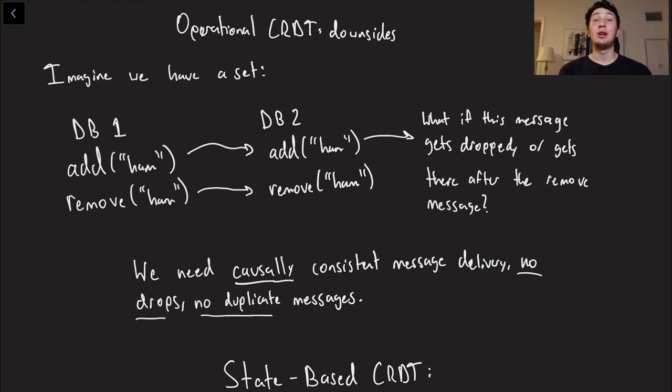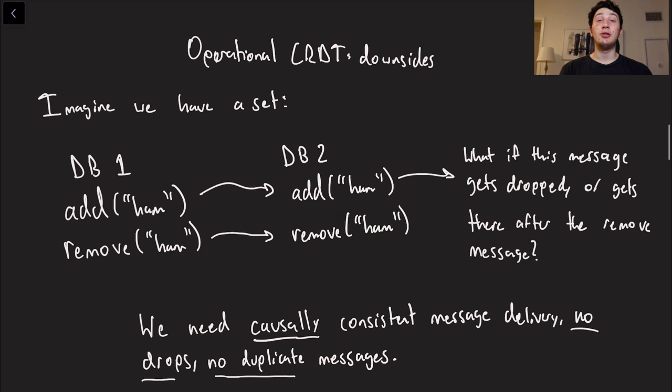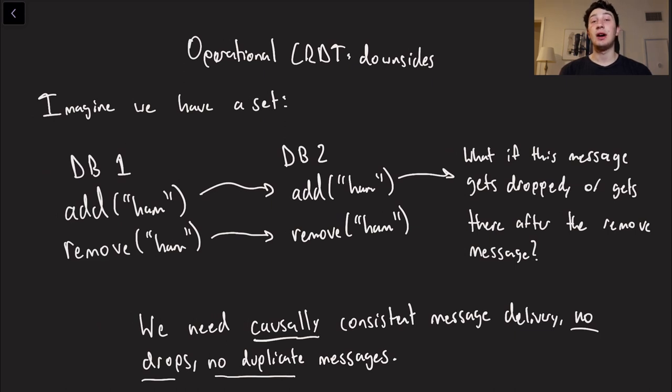It says sent over network because my handwriting is terrible whenever I'm rushed. So what are the downsides of an operational CRDT? Because we said that as opposed to sending the full vector, now we get to send a lot less over the network. It's going to be a lot faster. Well, there is actually a pretty significant downside, which is that whenever we have causal relationships amongst our operations, an operational CRDT could possibly let us down. So let's imagine that we have a set, and we're trying to implement that with a CRDT.